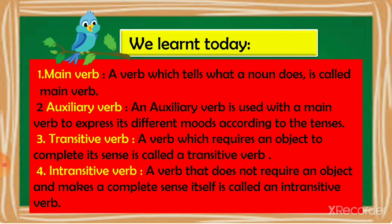So what we learned today: main verb — a verb which tells what a noun does is called a main verb. Auxiliary verb, or helping verb — an auxiliary verb is used with a main verb to express its different moods according to the tenses; auxiliary verbs play an important role in tenses. Transitive verb — a verb which requires an object to complete its sense. Intransitive verb — a verb that does not require an object and makes complete sense by itself.